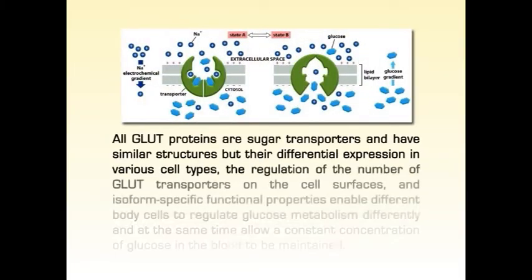The human genome encodes at least 14 highly homologous GLUT proteins: GLUT1, GLUT2, and so on till GLUT14. All GLUT proteins are sugar transporters and have similar structures, but their differential expression in various cell types, the regulation of the number of GLUT transporters on the cell surfaces, and isoform-specific functional properties enable different body cells to regulate glucose metabolism differently, while allowing a constant concentration of glucose in the blood to be maintained.